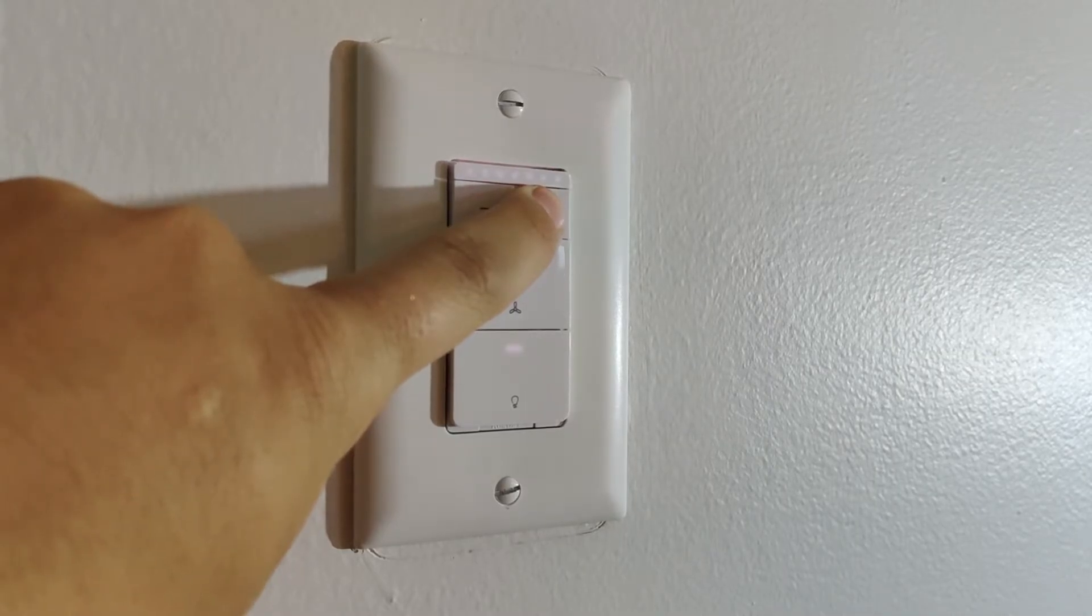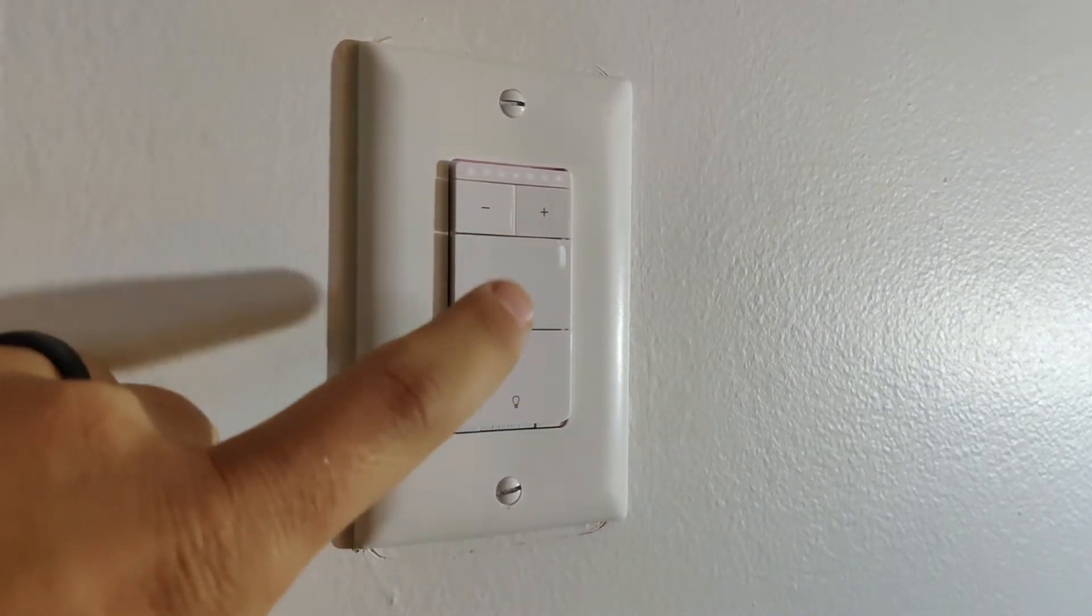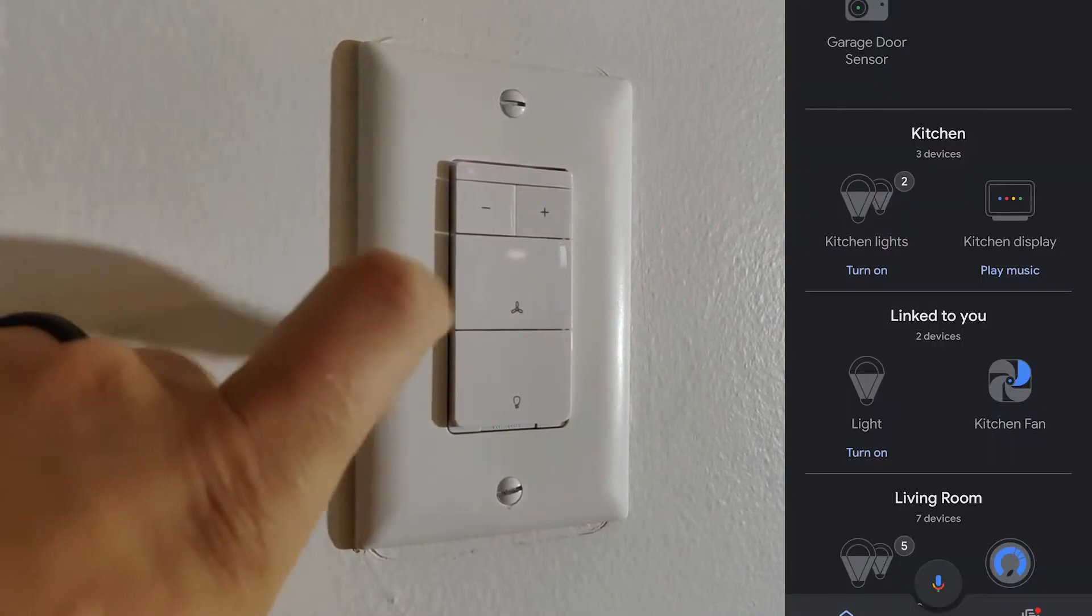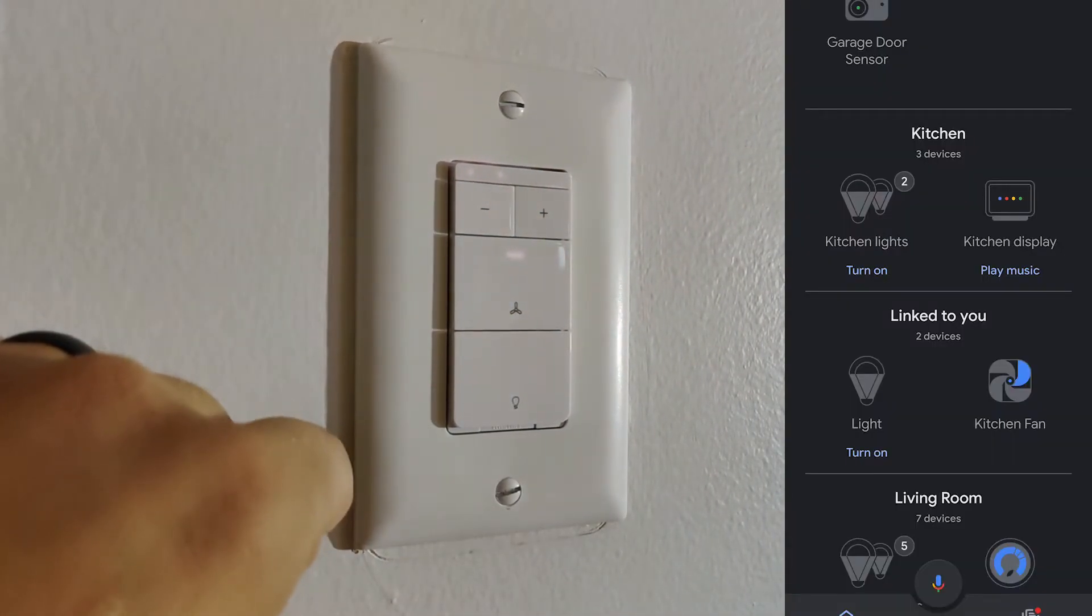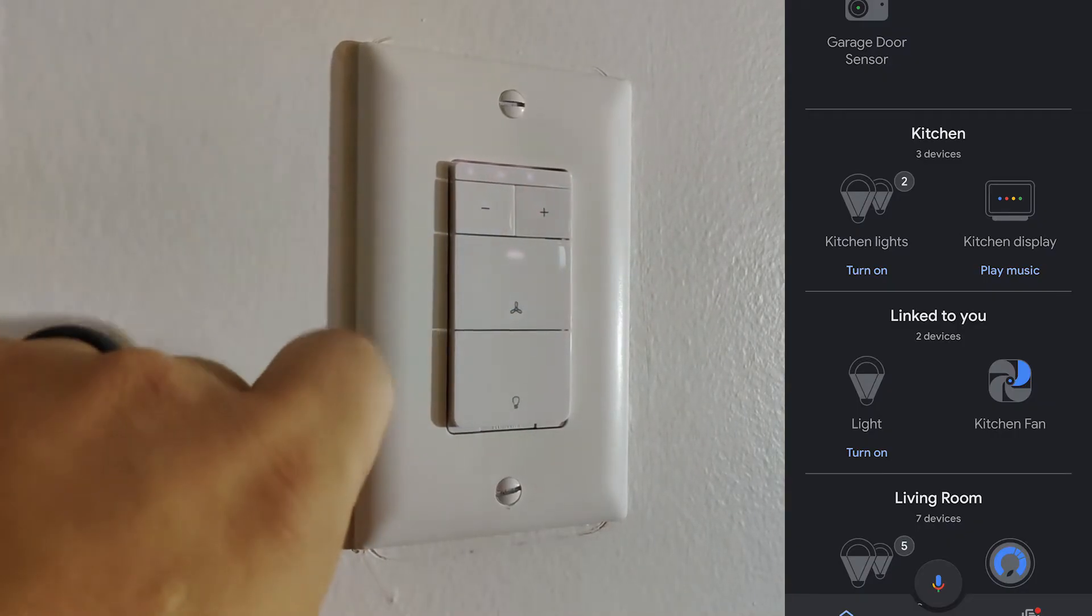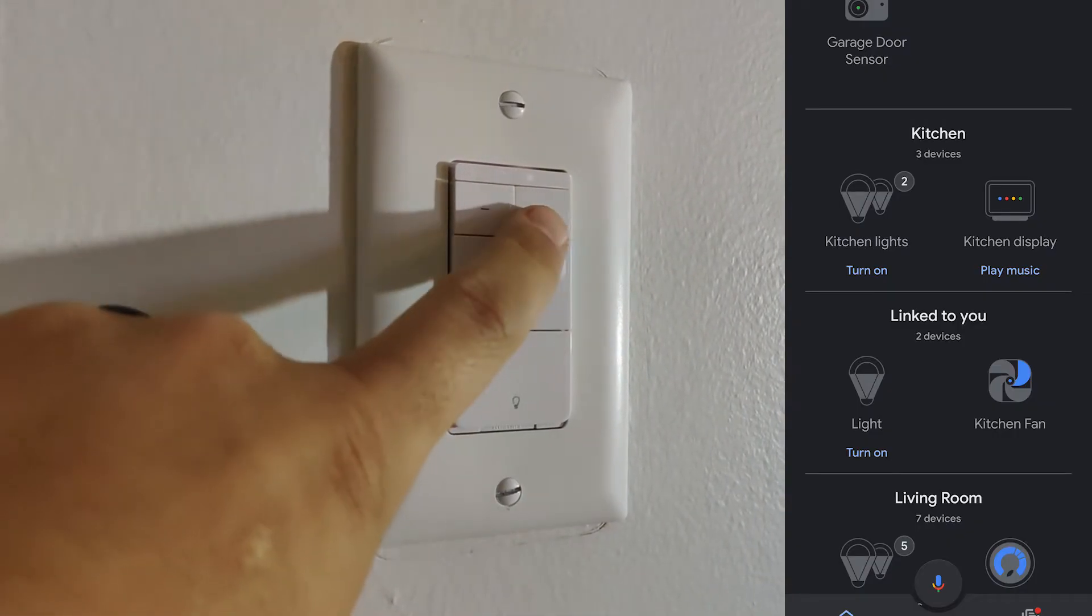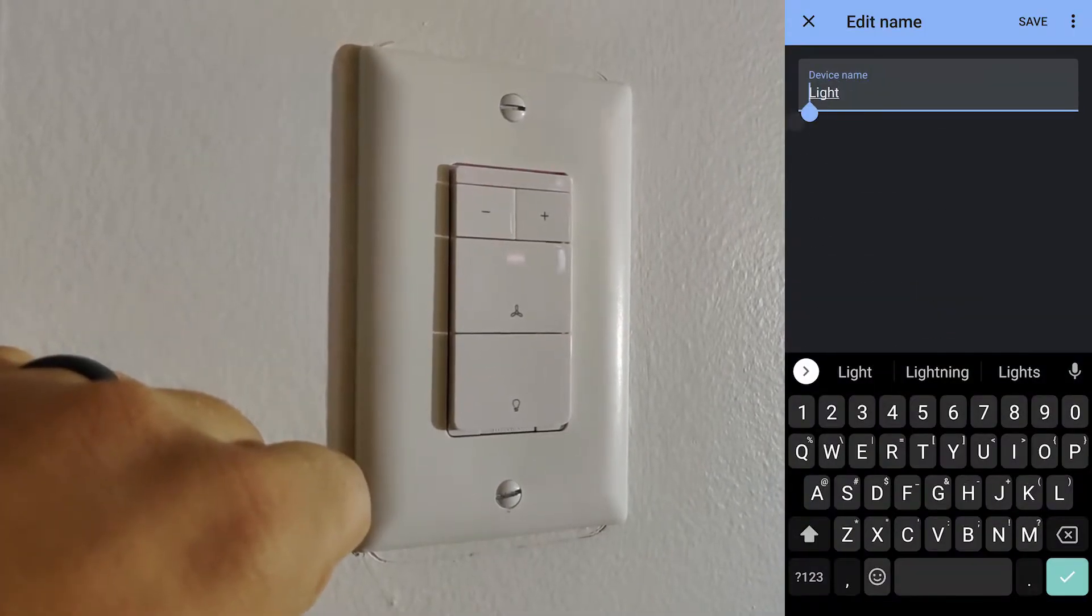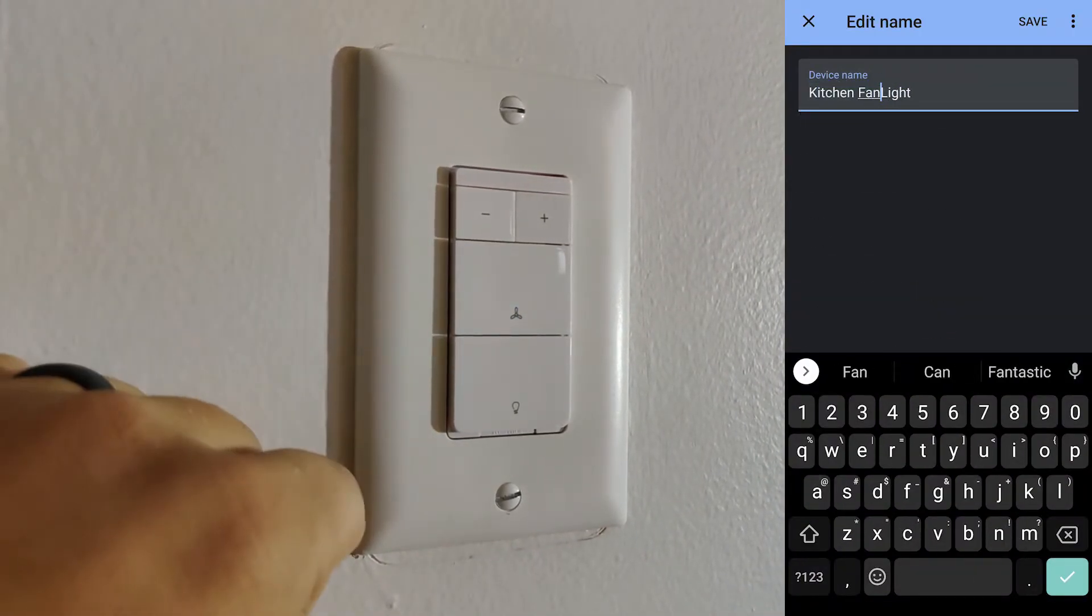One thing people may be wondering about is how it shows up in Google Home for example. It actually shows up as two separate devices. It shows up as a light and it shows up as a fan. The fan comes with the proper name as how you named it from the Smart Life app but the light is just called light. So you have to rename it and then put them both in the room of your choice.